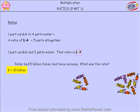Ten. Karen had ten lollies. So if Peter had five lollies and Karen had ten lollies, let's work out the ratio. We have P for Peter and K for Karen and that colon or those two little dots in between. That's the sign we normally put in between to show a ratio. Peter had five and Karen had ten. That's a ratio of five to ten.